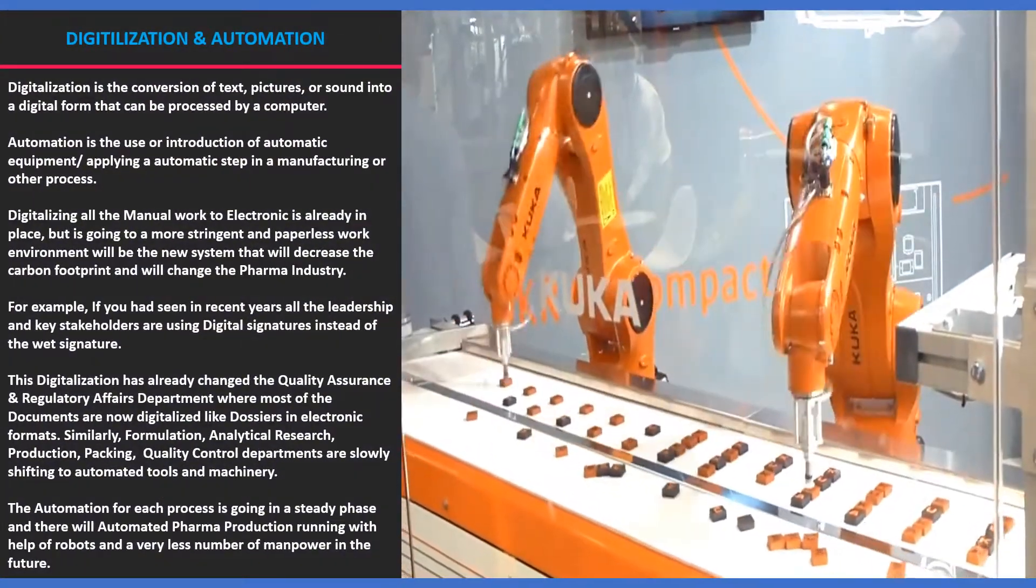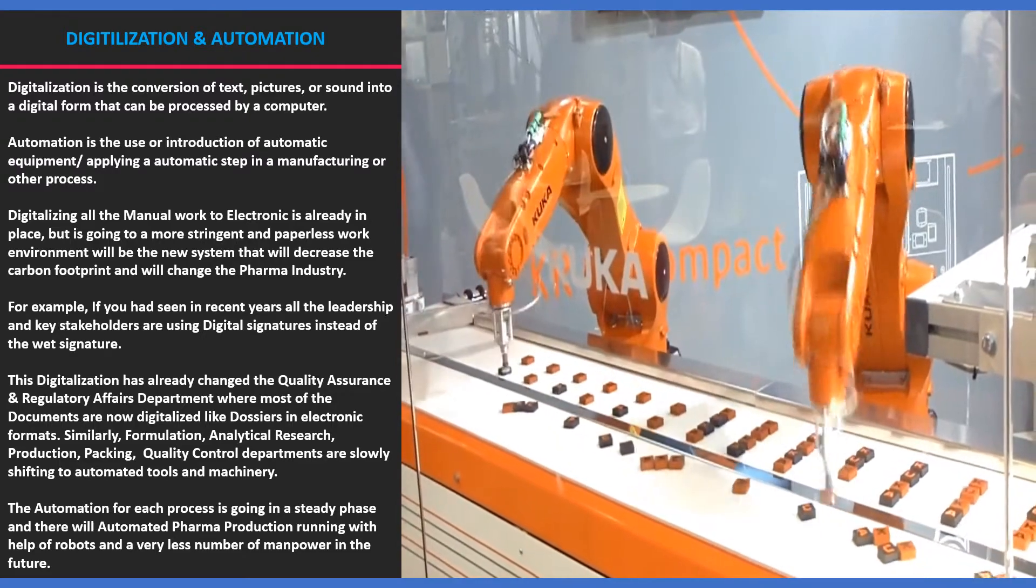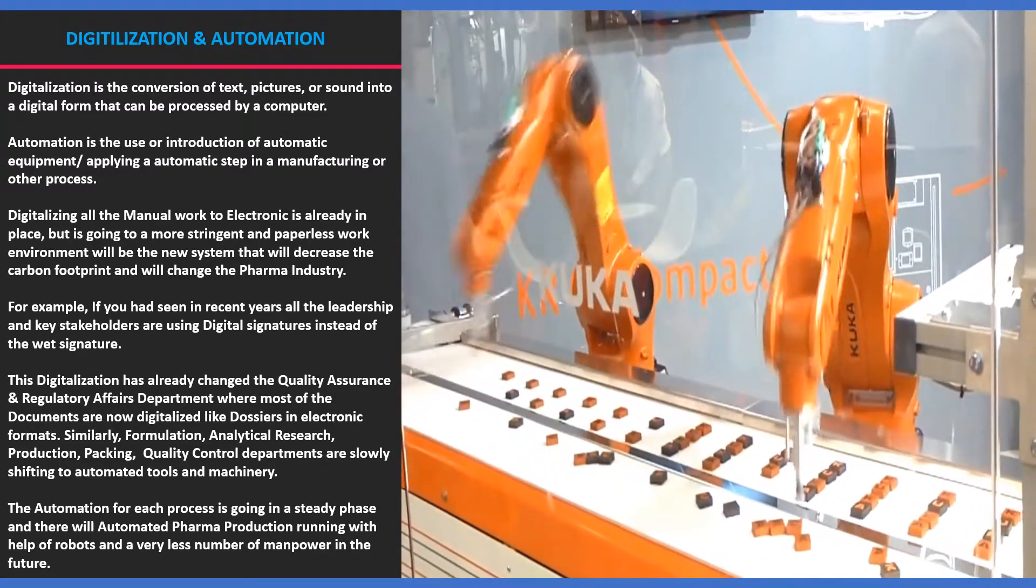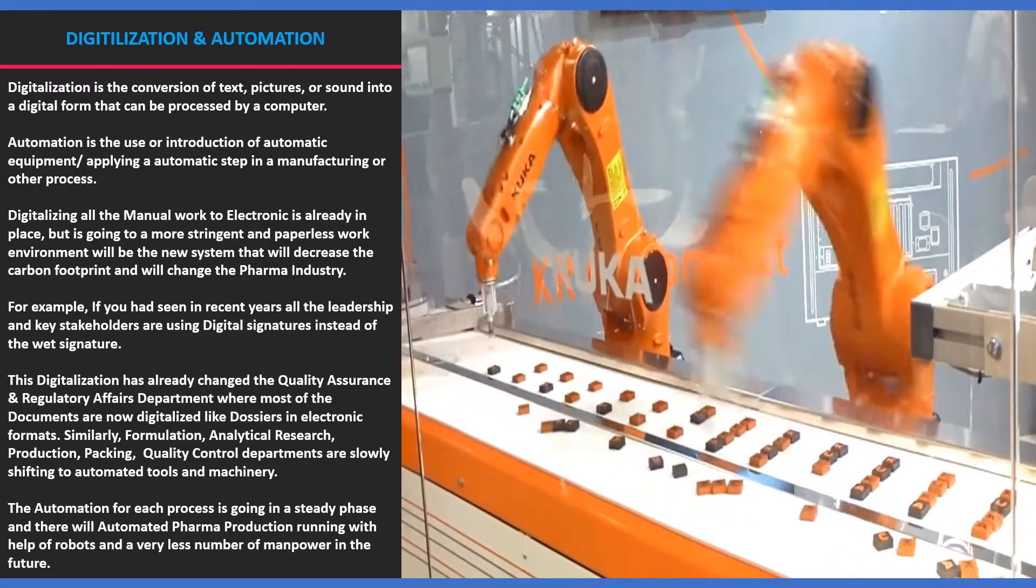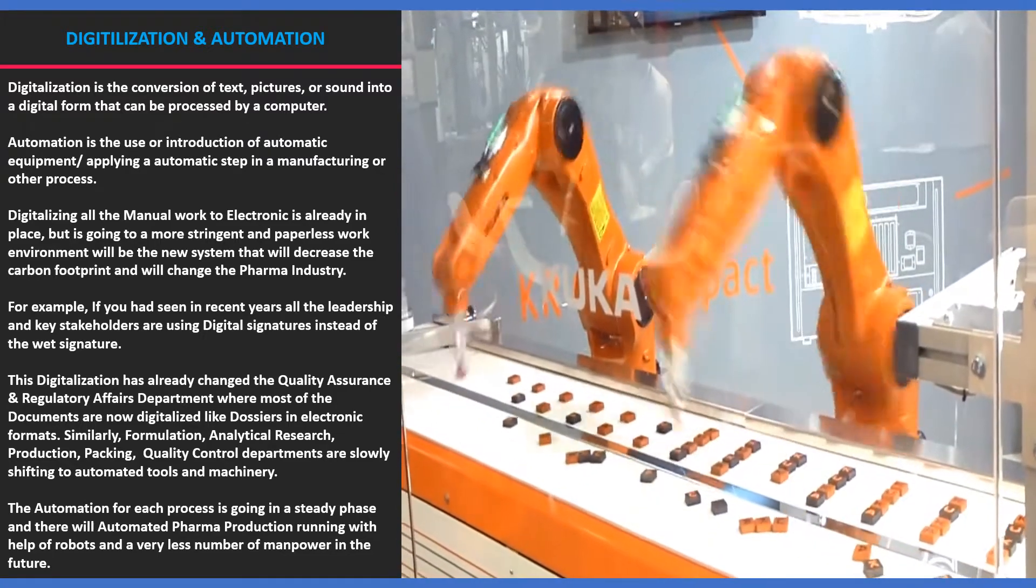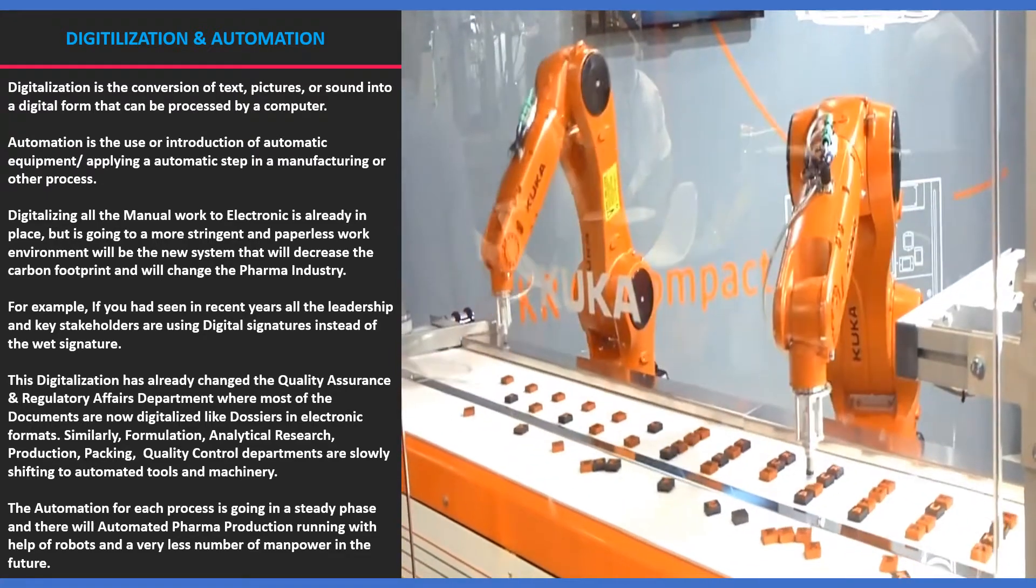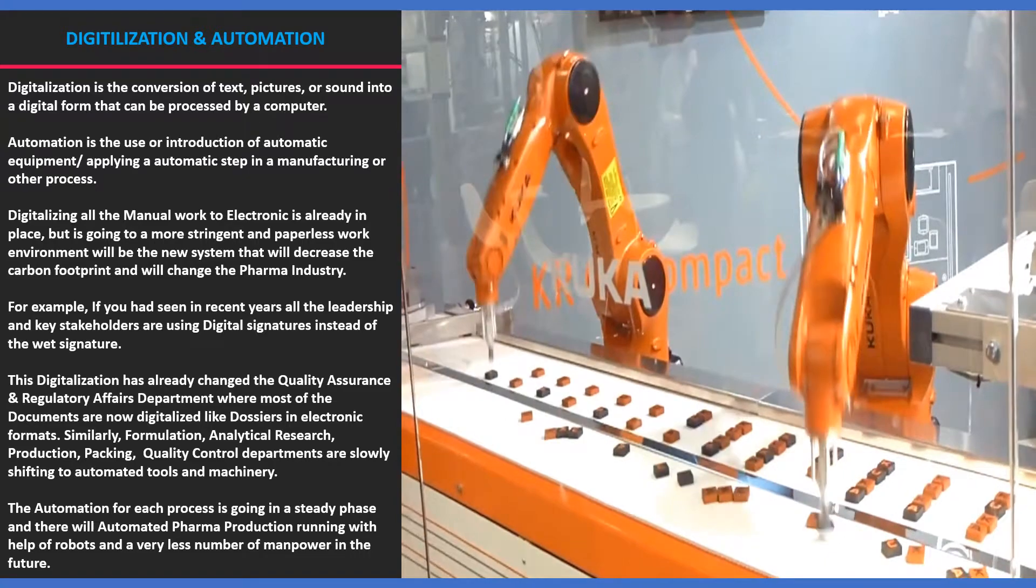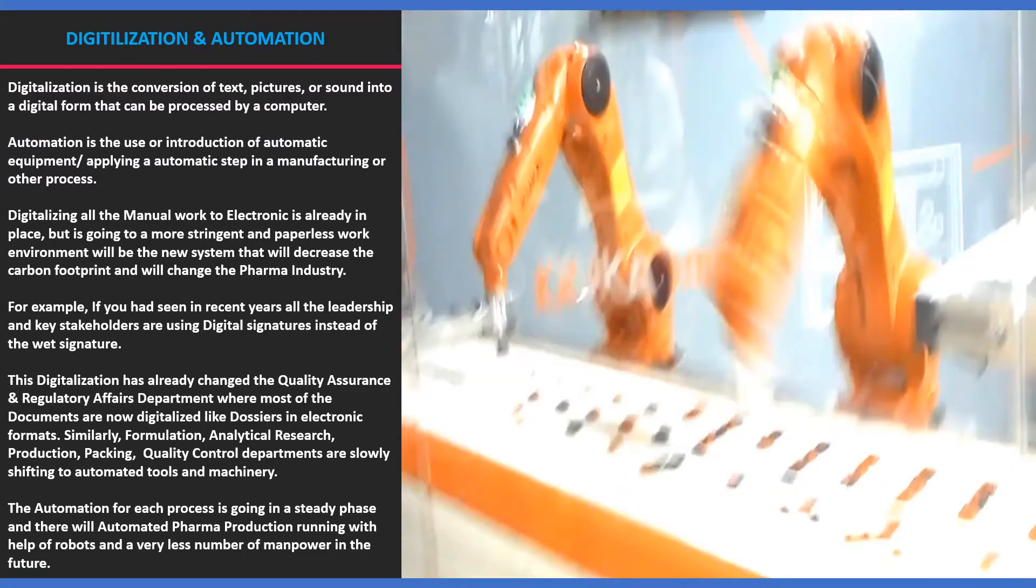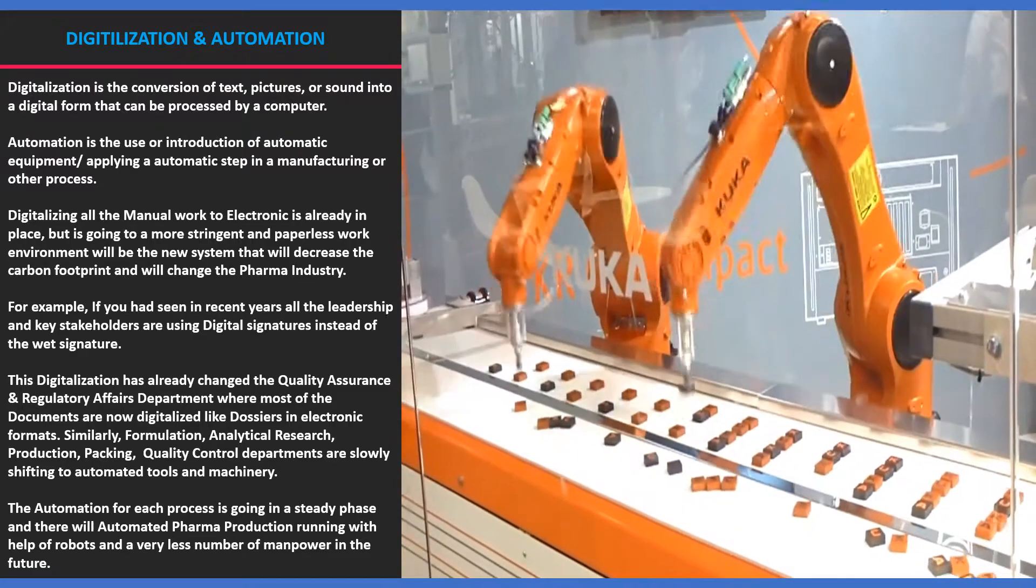In simple terms, digitalization is the conversion of text, pictures, or sound into a digital form that can be processed by a computer and automation is the use or introduction of automatic equipment or applying an automatic step in a manufacturing or other process. Digitalizing all the manual work to electronic is already in place, but is going to a more stringent and paperless work environment will be the new system that will decrease the carbon footprint and will change the pharma industry.